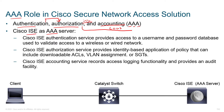The Cisco ISE authentication service provides access to a username and password database that lives in ISE. Alternatively, you could put ISE in between the device and AD. The client authenticates to the switch, the switch sends credentials to ISE, and ISE can talk to multiple AAA servers on the backend or use its internal local user database. If you already have an Active Directory domain, it typically makes the most sense to connect ISE into AD — ISE will actually become part of your Active Directory domain and forward requests to the domain controller.